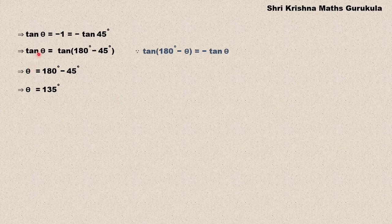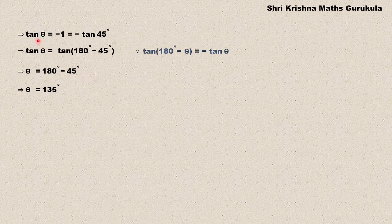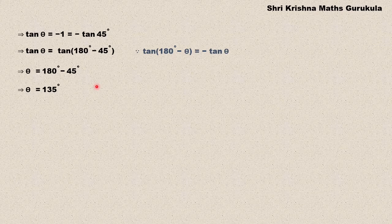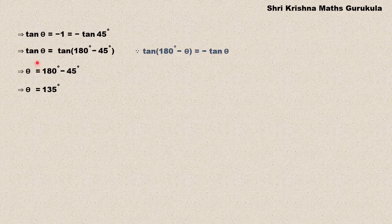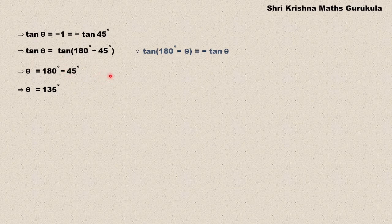One important thing to note: when we write tan θ = tan(180° - 45°) and conclude θ = 180° - 45°, it is absolutely wrong to think of this as 'cancelling' the tan. Tan is not a numerical value — it is a trigonometric function, just like sine and cosine. You cannot cancel tan the way you cancel a number. The reason we equate the angles is that the values of tan θ on both sides are equal, so the angles must be equal. It is not cancellation or simplification.